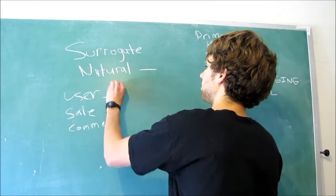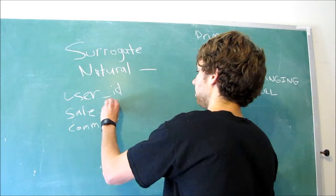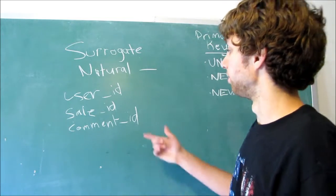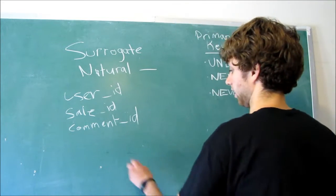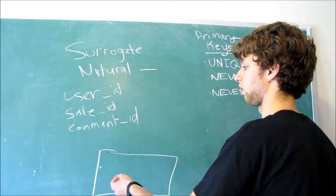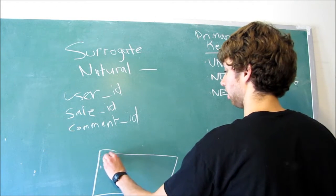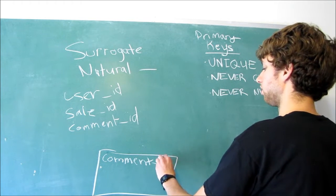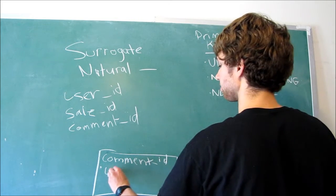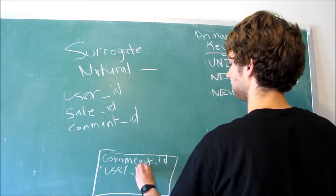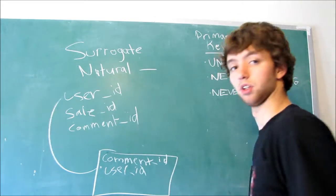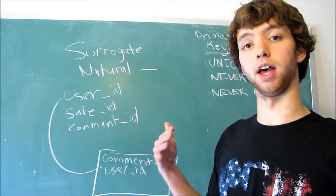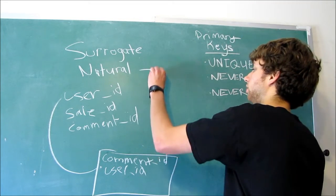Let's say we have a user table, and then we have a sale table, and then we have a comment table. What we do is we give every single table an ID column. So, we have a user ID column in the user table. We have a sale ID column in the sale table. We have a comment ID in the comment table. We're going to have a column for the comment ID. And then we'll need a reference to the user that posted the comment. So, we'll have the user ID as a foreign key, which points back to the user table. Now, we just have random numbers.